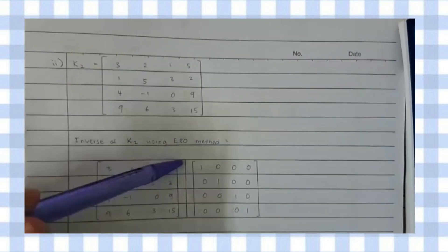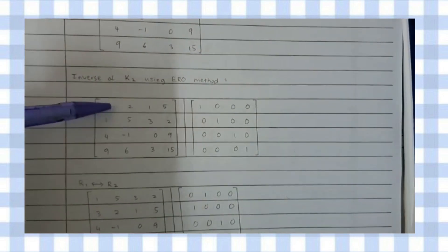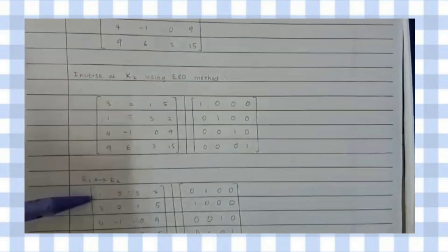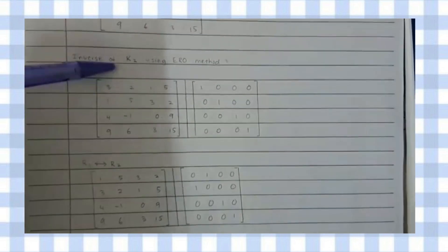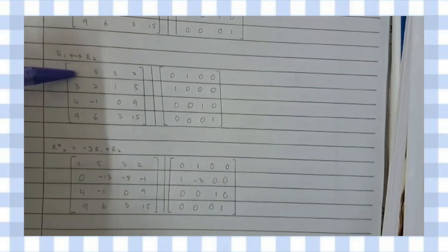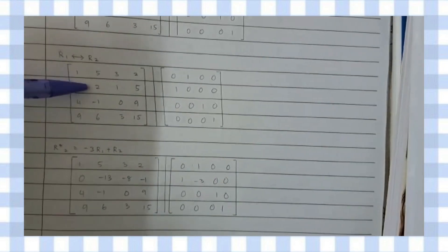For the second test, we will find the inverse of K2 using the augmented matrix method. This is the given matrix. For the first step, we will change the 3 to become 1 by swapping row one with row two, so the first row moves to the second row and the second row moves to the first row. The new form will look like this.